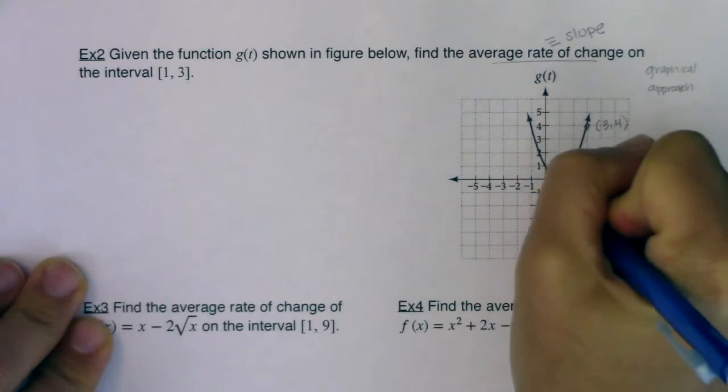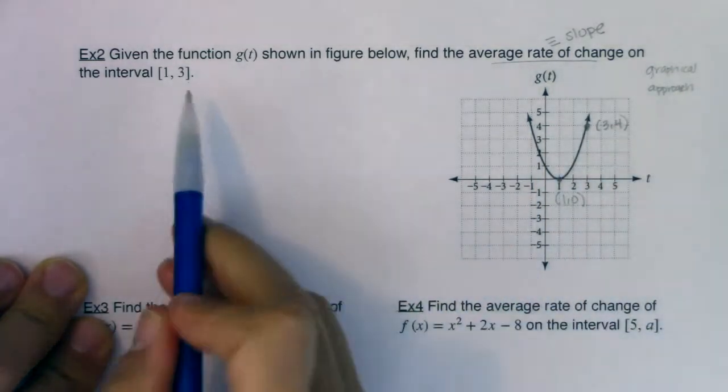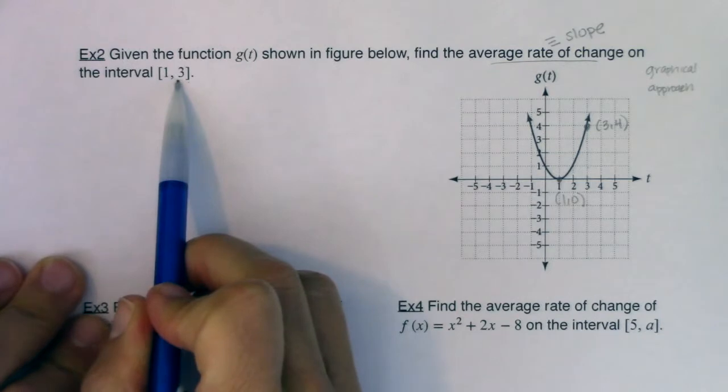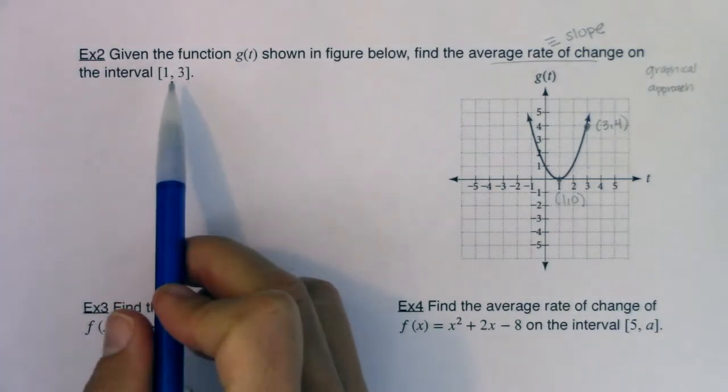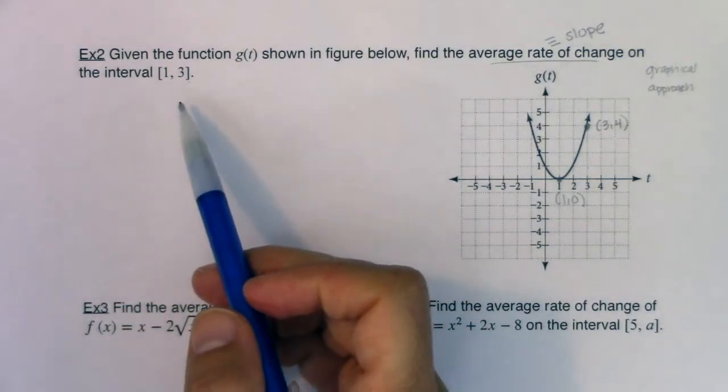And this is 1, 0. And again, I'm picking t equaling 1 and 3 just because that was what I was given. If this had said 0 and 2, I would have used those two ordered pairs.